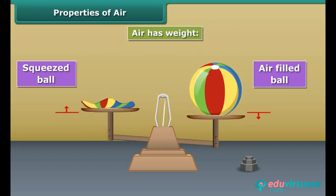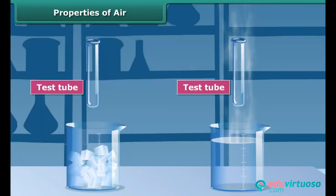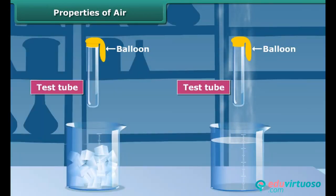Put the air-filled ball on one side of a balance, and a similar empty and squeezed ball on the other side. As you can see, the pan with the squeezed ball goes up, indicating that it is lighter than the air-filled one.